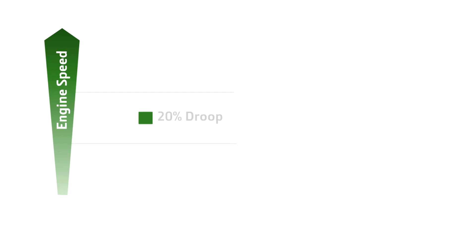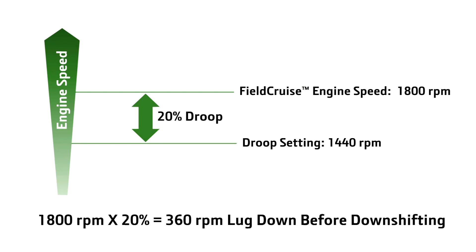When field cruise is on with a setting of 1800 RPM, the droop setting is now 20% of 1800, or about 360 RPM before it begins to downshift. You can see that by using a percent setting, the transmission can automatically recalculate the shift points when maximum engine speed is adjusted.